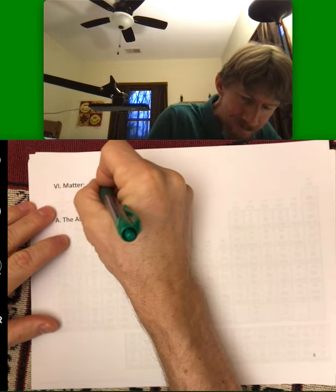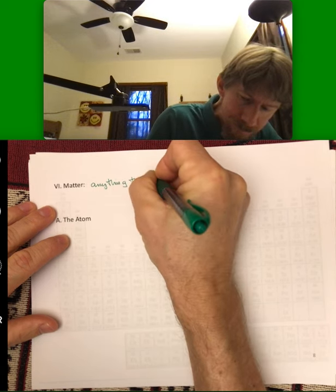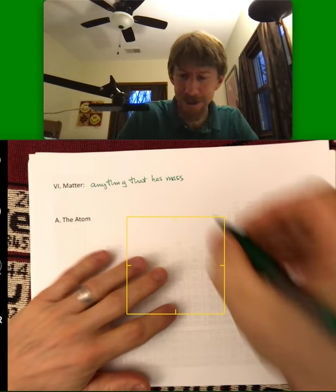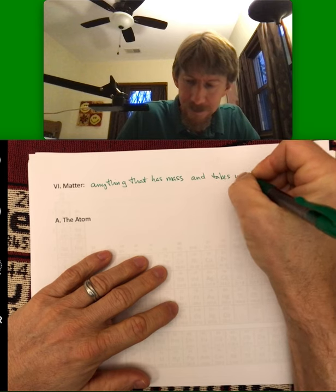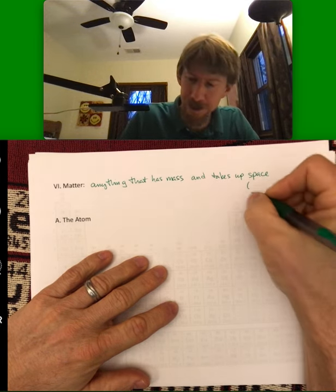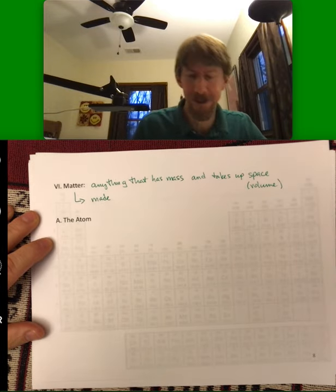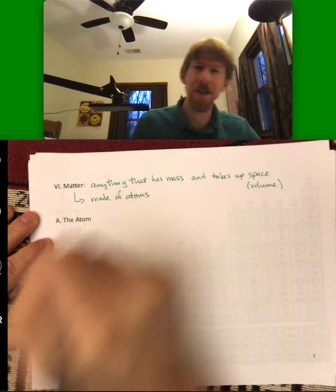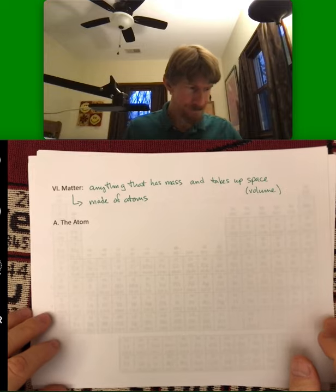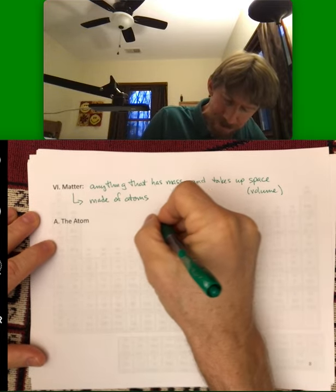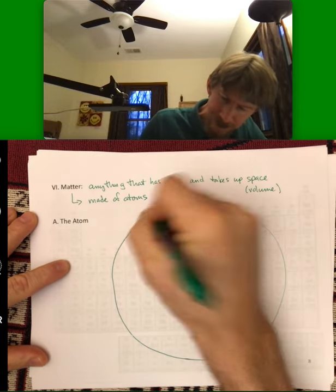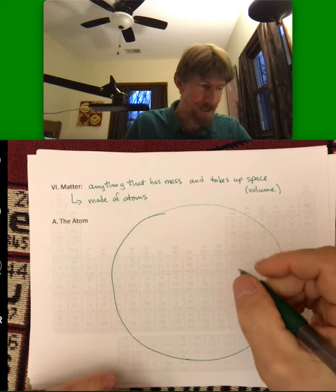Now on to our next part of this video. And we'll again get back to matter. Matter is anything that has mass. Matter is something that has mass and takes up space. And another word for space we might use is volume. And again this is going to be anything that is made of, so made of atoms. Matter is made of atoms. And we're going to talk a lot about atoms. But let's start by drawing a picture.